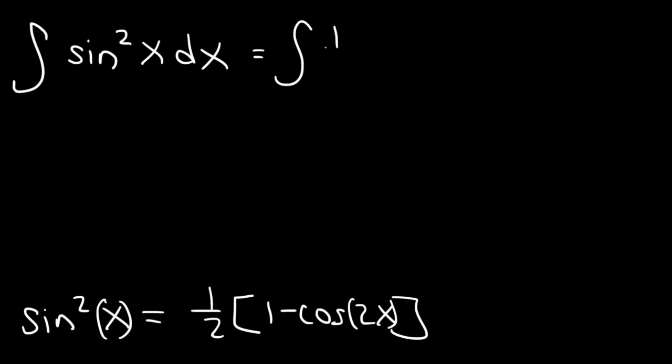So we now have the integral of 1 half times 1 minus cosine 2x. Now what I'm going to do is take this constant and move it to the front.